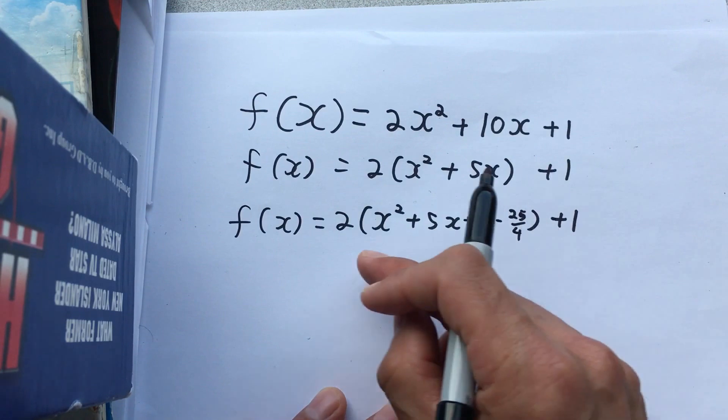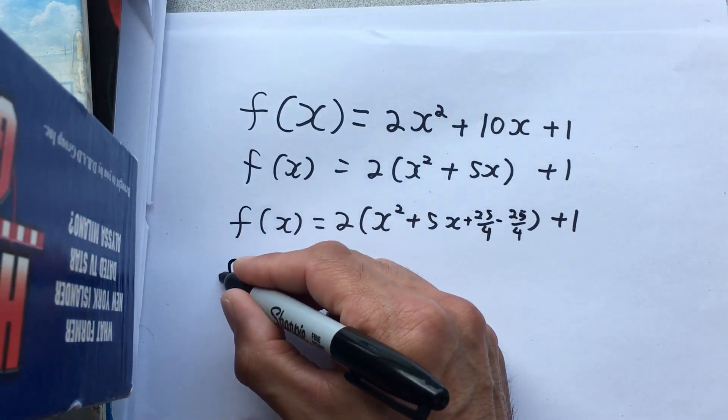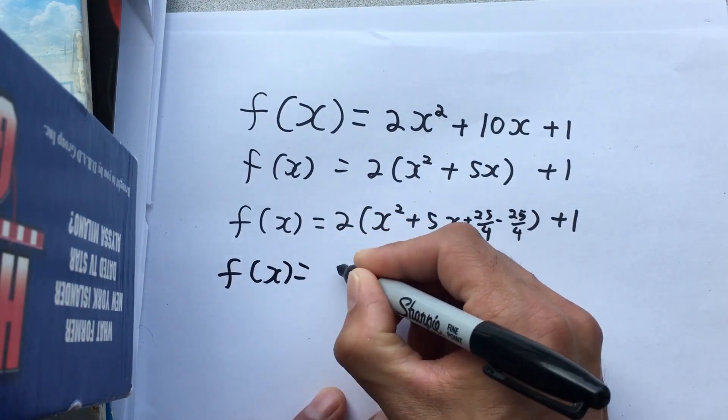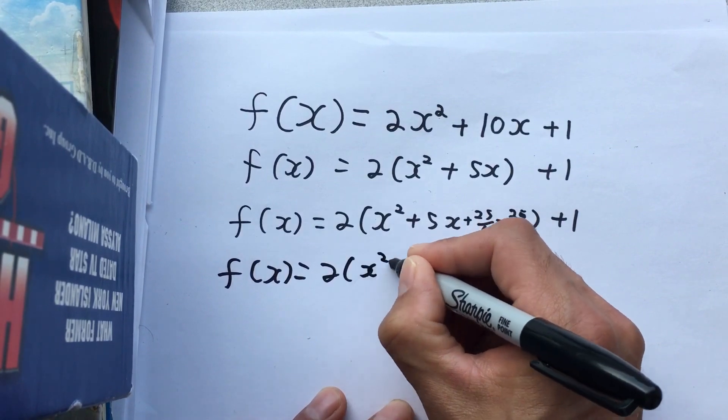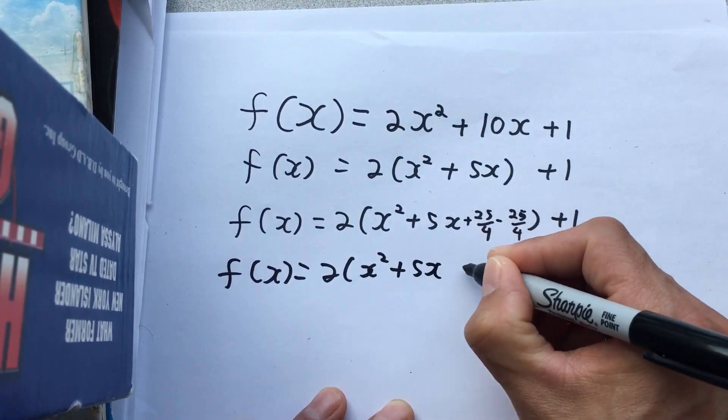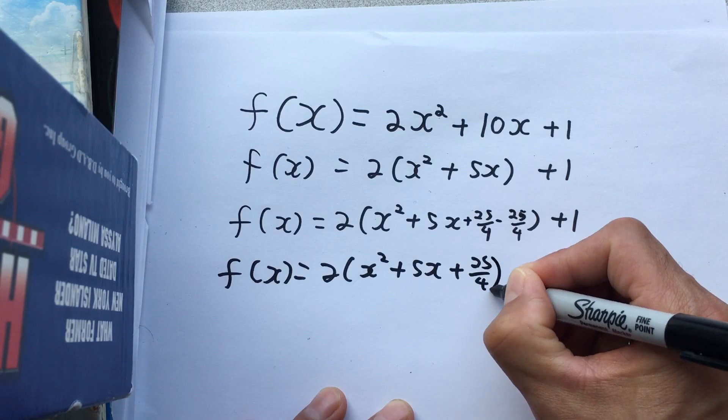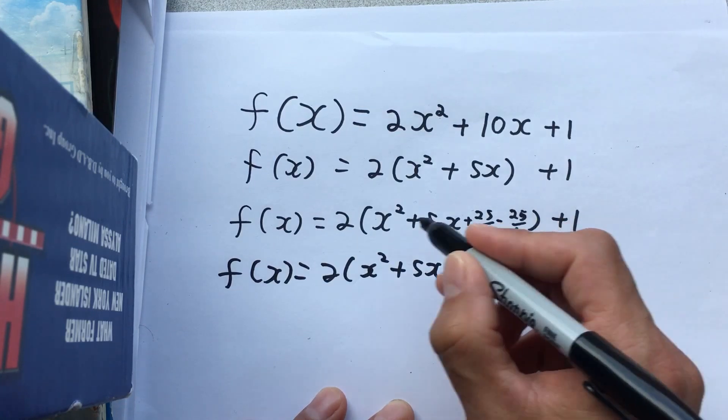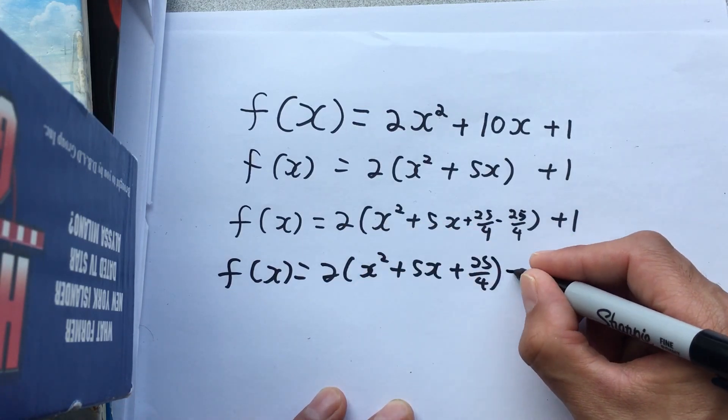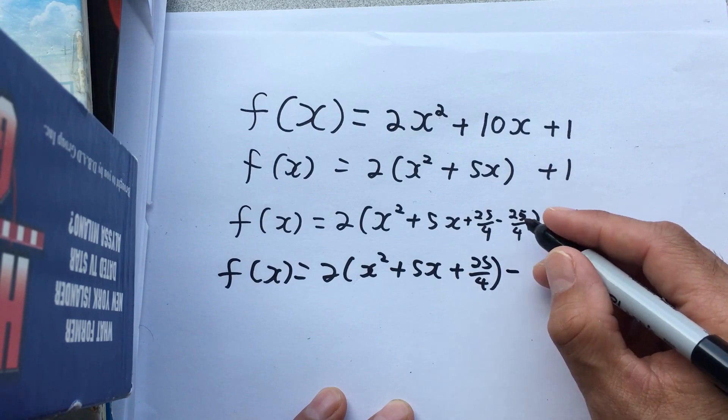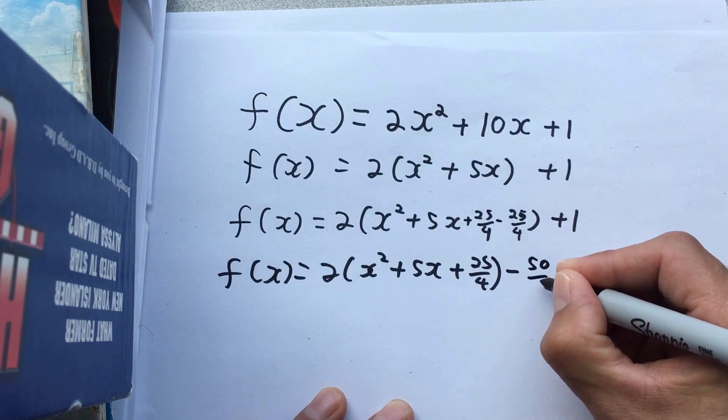So to pull it out, I must multiply it by 2. So my next line, f(x), is 2(x² + 5x + 25/4). And to get this out, I'm going to multiply it by 2. So that's negative 50 over 4.